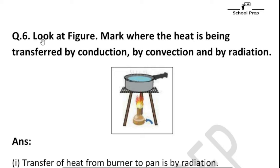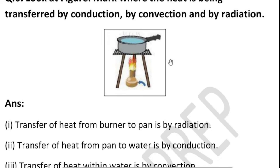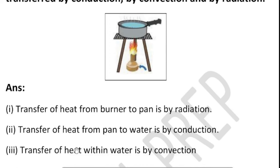The next question asks to look at the figure and mark where heat is transferred by conduction, convection, and radiation. The transfer of heat from the burner to the pan — since the pan is heated directly with no medium — is by radiation. Heat from the pan to the water is by conduction, as heat moves from one particle to the next. Within the water itself, heat transfer is by convection, as water molecules move as a whole mass.